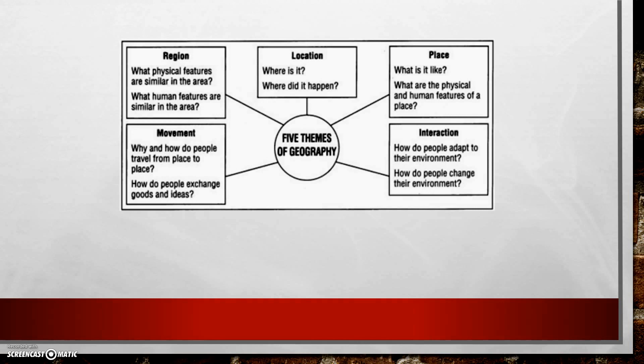Here are some basic questions we need to answer when looking at the five themes. For place: What is it like? What are the physical and human features? For interaction — human environment interaction — how do people adapt, meaning change to their environment, and how do people change their environment?